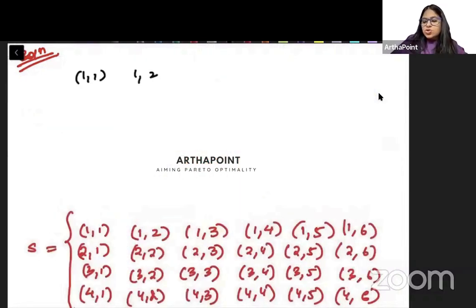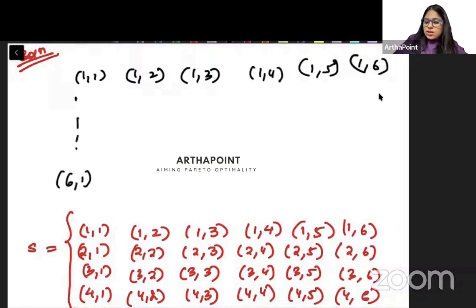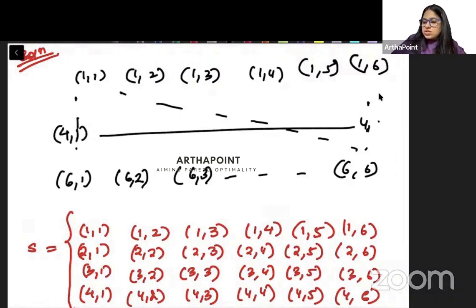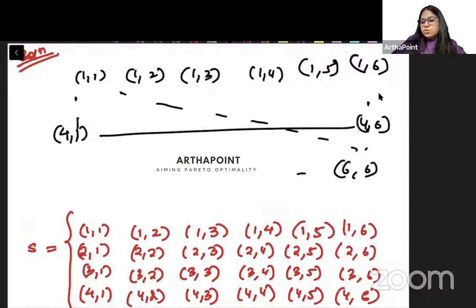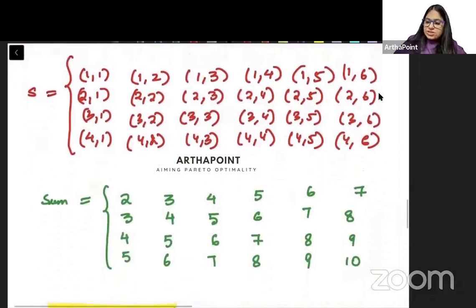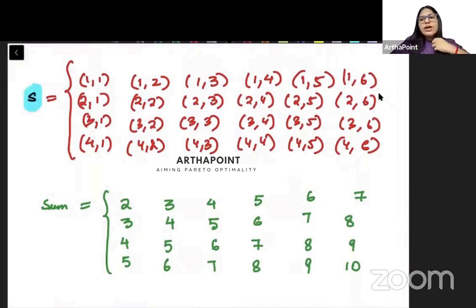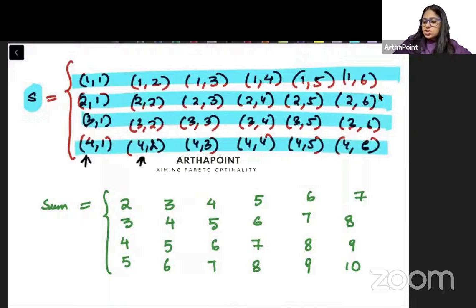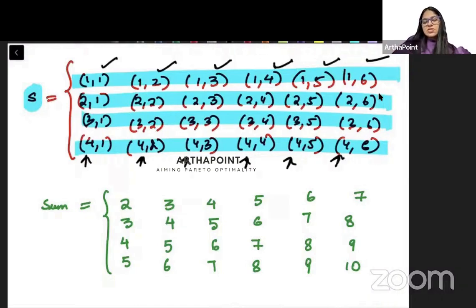When we throw two dice we make a sample space like: (1,1), (1,2), (1,3), (1,4), (1,5), (1,6) and going up to (6,1), (6,2), (6,3) and so on till (6,6). But here the second die only goes up to 4, so the sample space only goes till 4 for that die. That's the only difference.